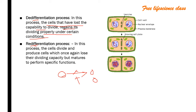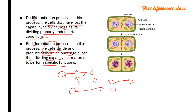Redifferentiation is when the cell divides and produces cells which once again lose their dividing capacity but mature to perform specific functions. So once a cell is differentiated into two new cells it cannot further differentiate, but in redifferentiation it again undergoes differentiation and the cells perform specific functions.